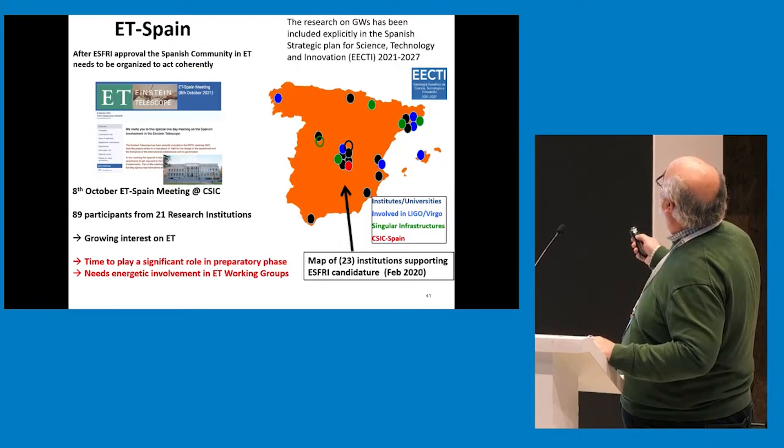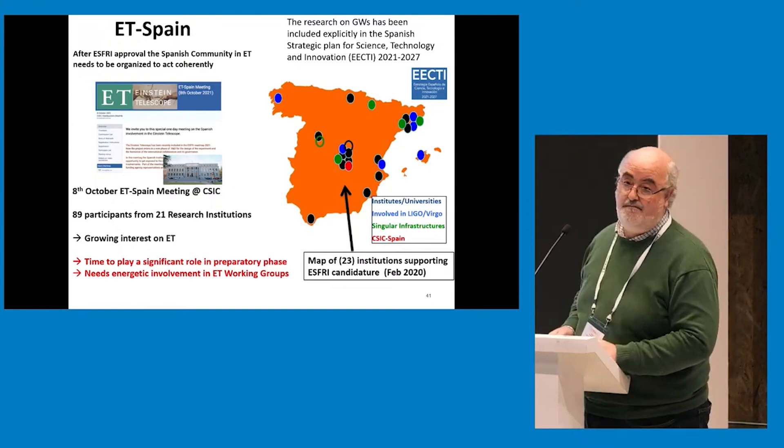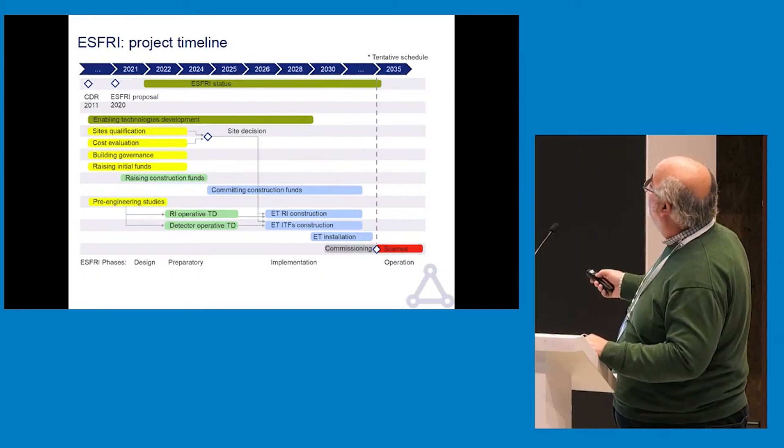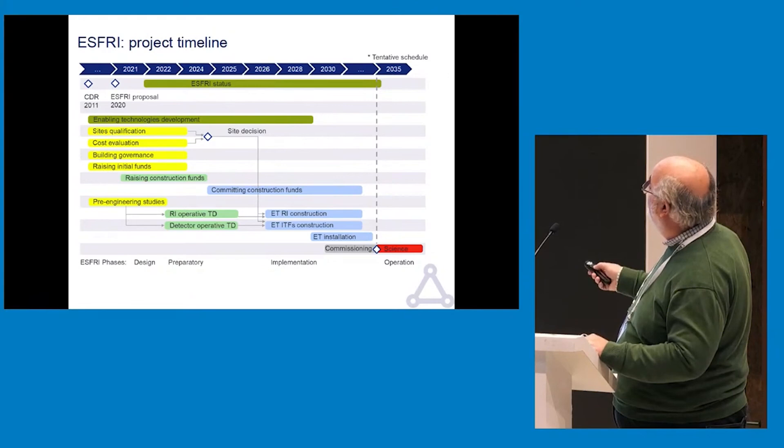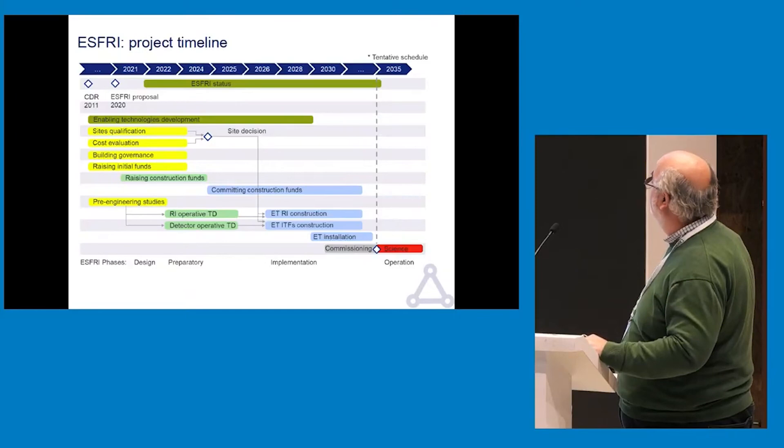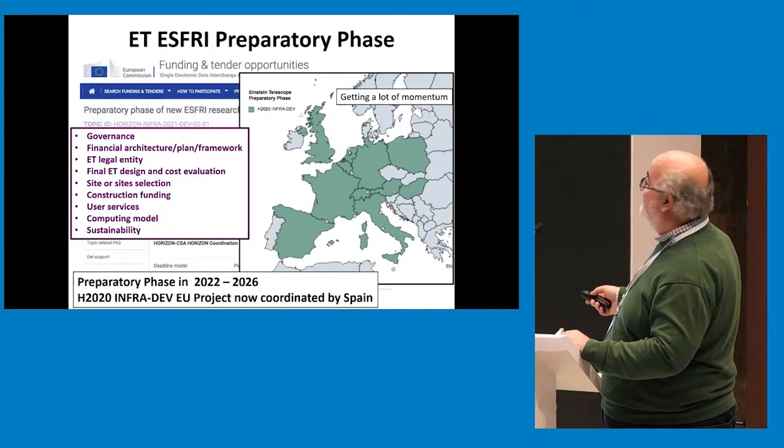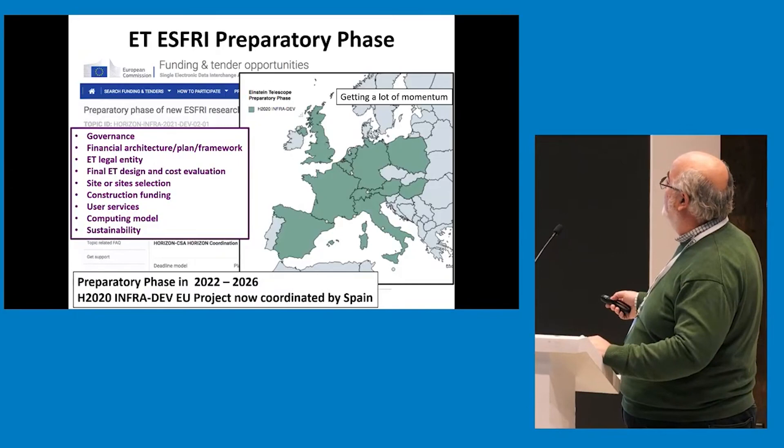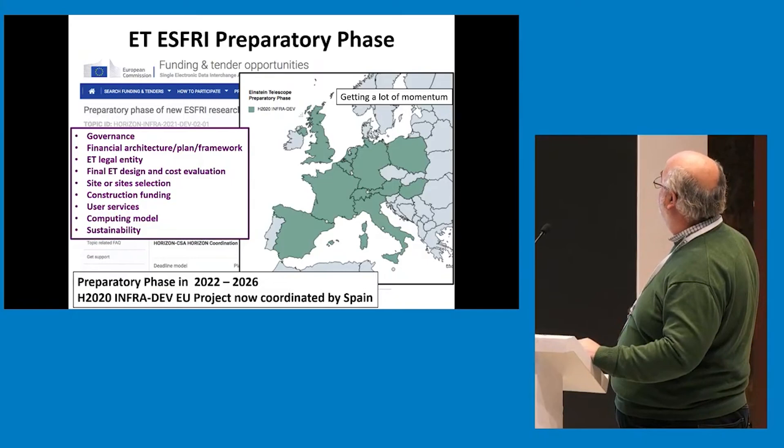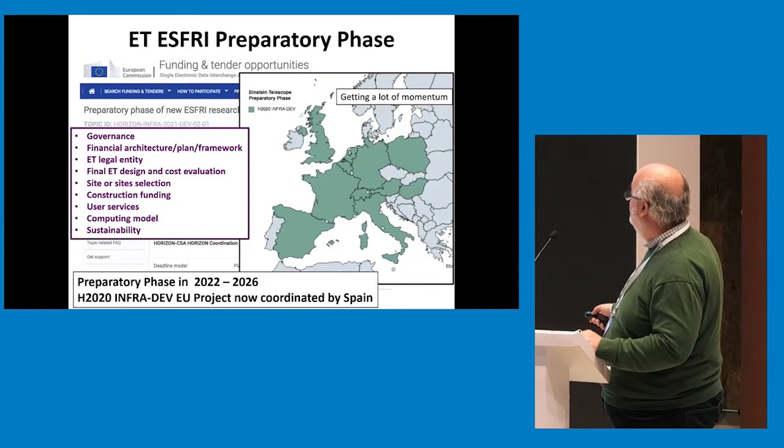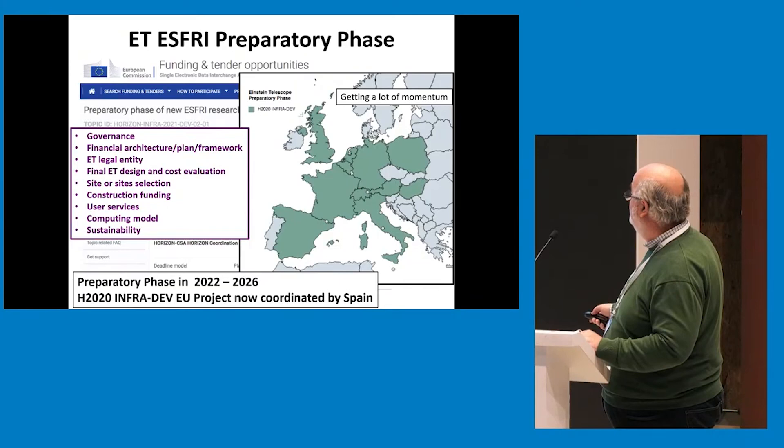One thing that you should note is that also gravitational waves is inside the strategic plan for science and technology of Spain. We are in the process of now developing this infrastructure. We are going to have selection site by 2024-25, starting for construction, hopefully, 2026-27, maybe go a little bit to 2028. We are in the preparation phase now. This is the map of the countries now in this preparatory phase. The important message here is that Spain is going to be the coordinator of this phase for the next four years. So Spain is playing an important role there.